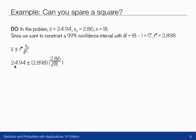So we're just going to substitute the numbers that we have in and calculate to get 24.94 plus or minus 1.95. That gives us 22.99 to 26.89.